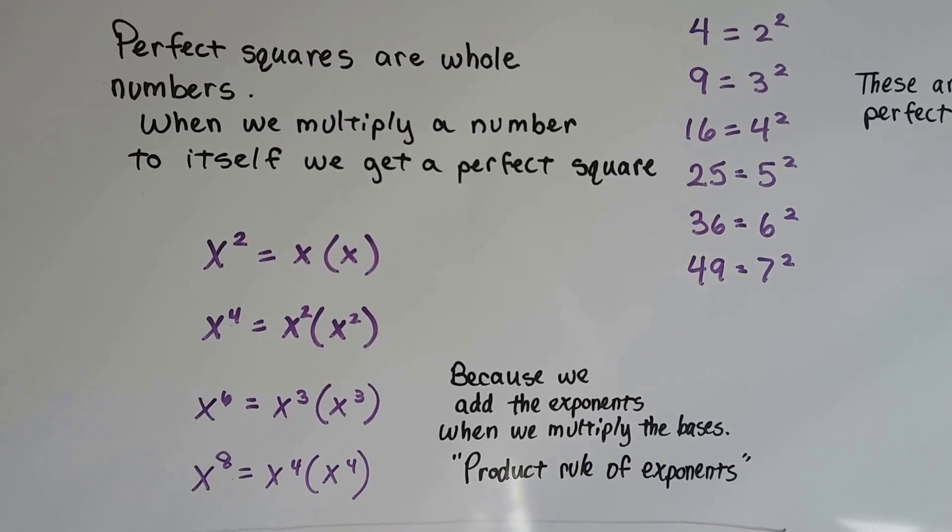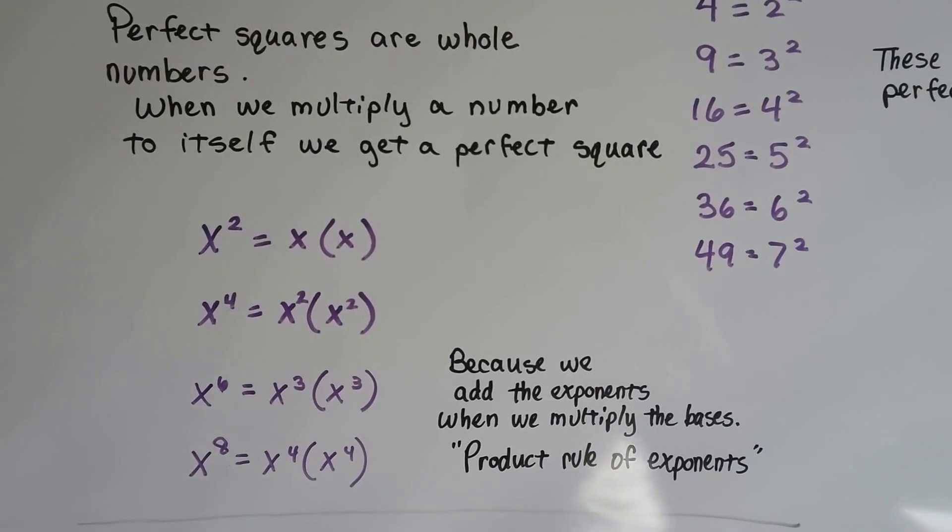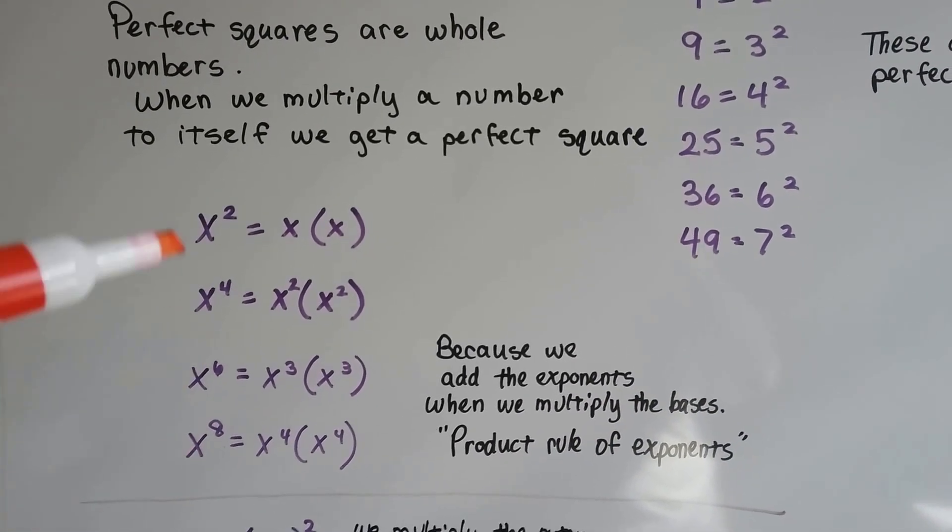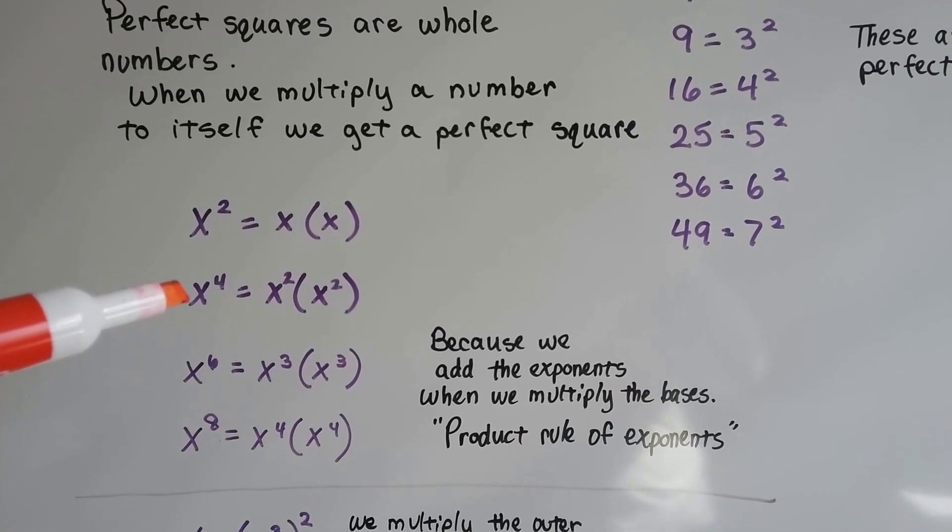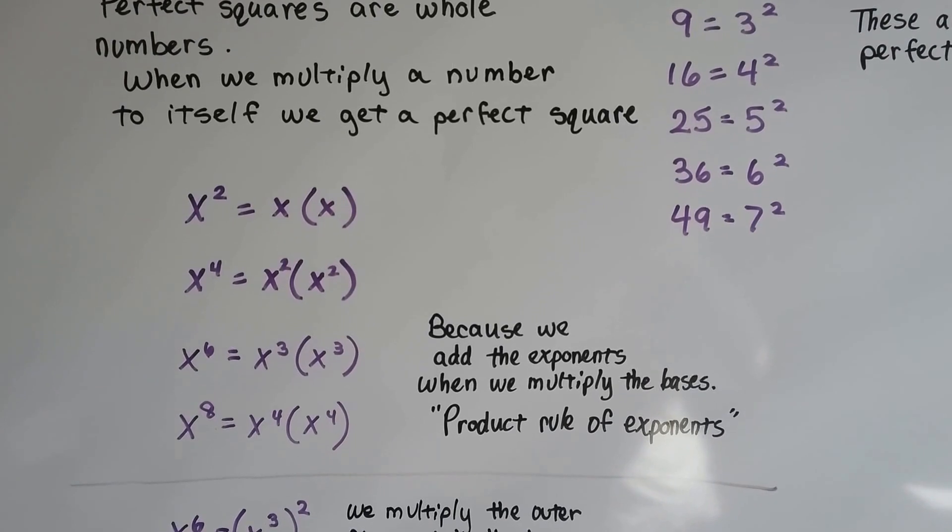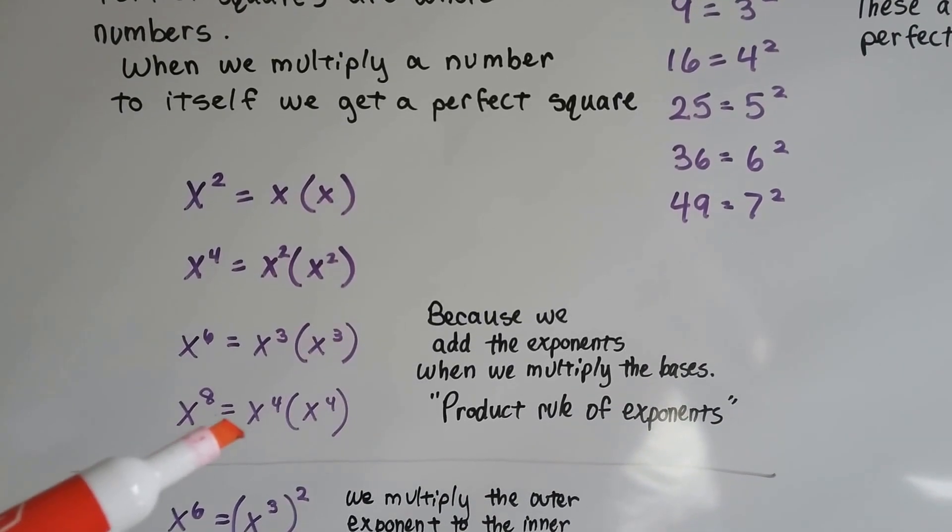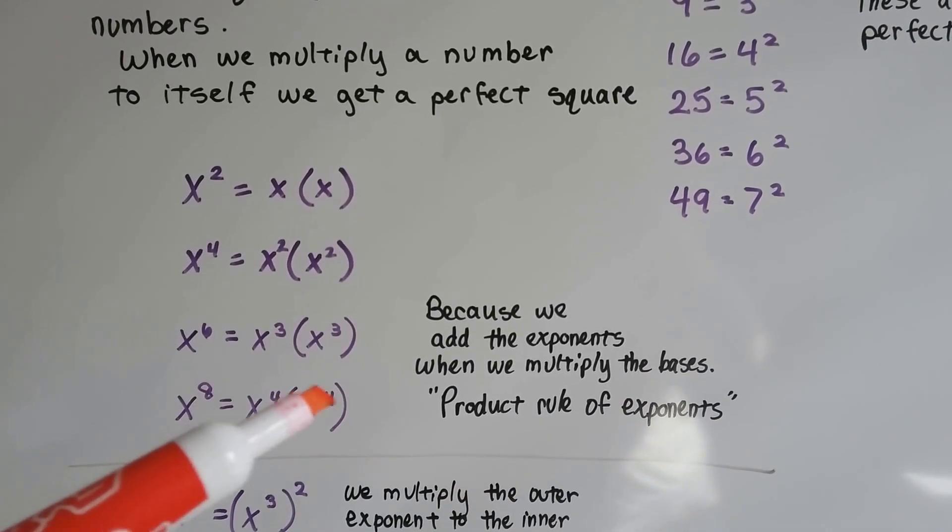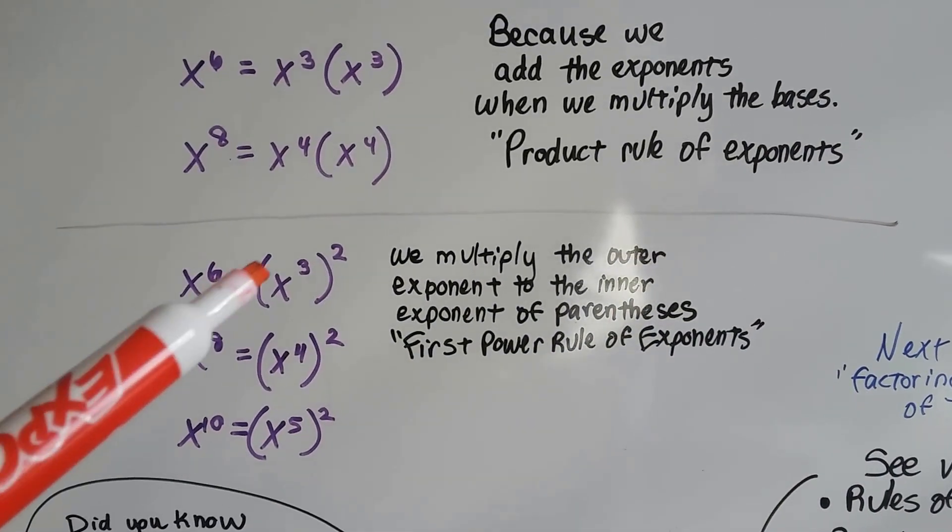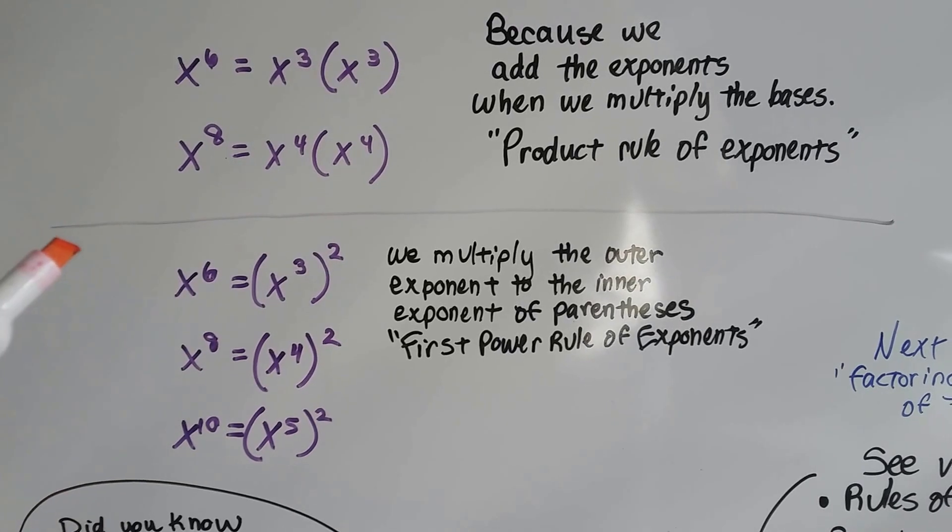And because we can add exponents when we multiply the bases, the product rule of exponents lets us turn this x to the 4th into x to the 2nd times x to the 2nd. And x to the 8th power could be x to the 4th power times x to the 4th power.